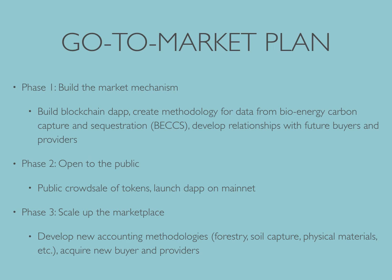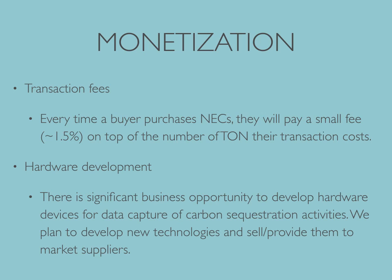Additionally, in the future we want to work with all sorts of different providers — for example, manufacturers of products that use carbon dioxide as a chemical feedstock. There are already companies that make plastics, carpet, and tennis shoes out of carbon dioxide, and we want to measure exactly how much they are storing so they can receive token credits. Our monetization plan is based on a simple transaction fee: when a buyer purchases negative emissions credits, they'll pay a small fee on top of the tokens used. We also see opportunity to develop new hardware sensors and accounting methods that we could sell to new partners.